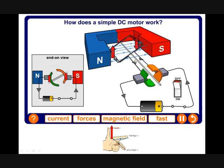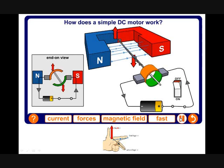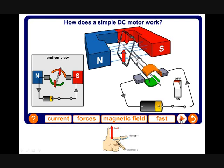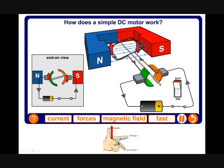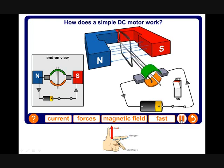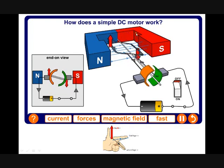You'll notice that when it's right at the top, the force will disappear if you just let it turn a little bit further, because the current here is not actually cutting through the field lines. So just there it disappears and swaps around and goes the other way. So that's how a simple DC motor works.